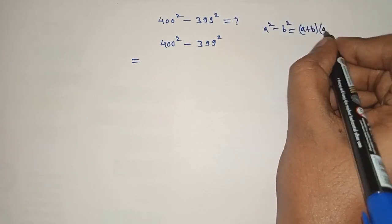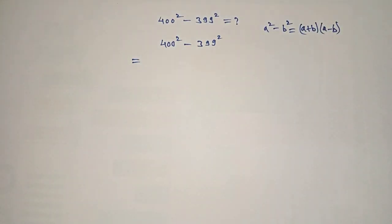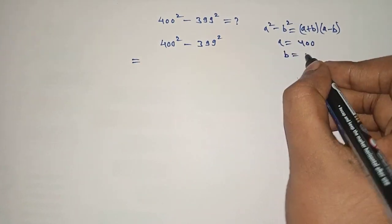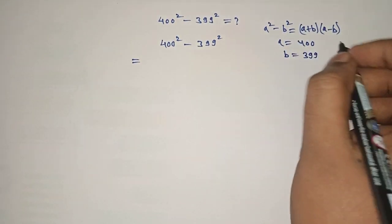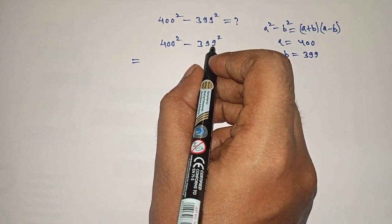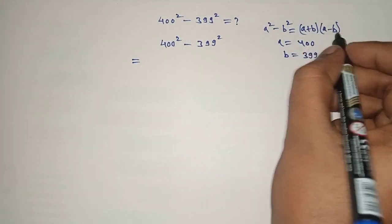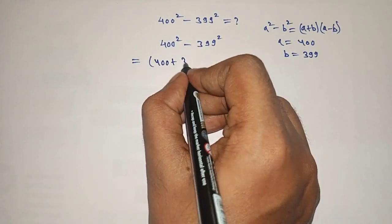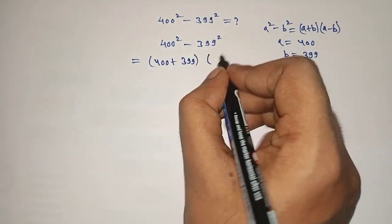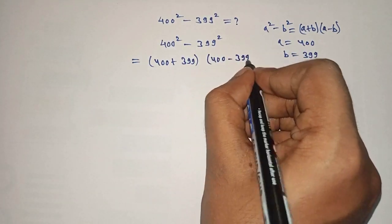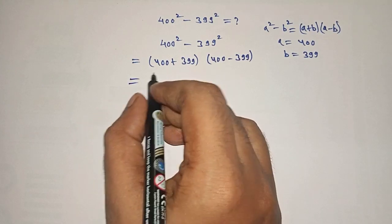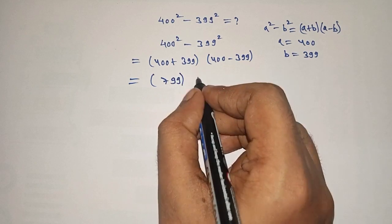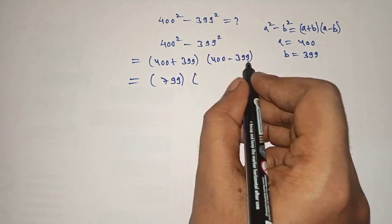Here our a will be 400 and b will be 399. So we can write 400 squared minus 399 squared as a plus b into a minus b, which gives us 400 plus 399 into 400 minus 399. That equals 799 into 1.